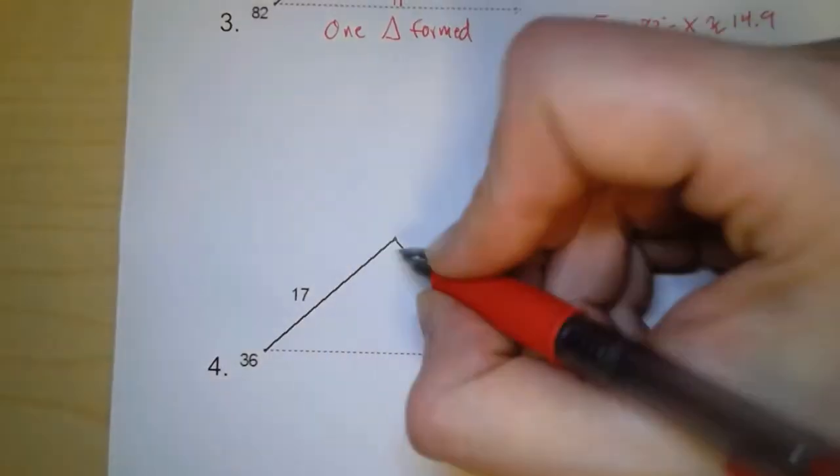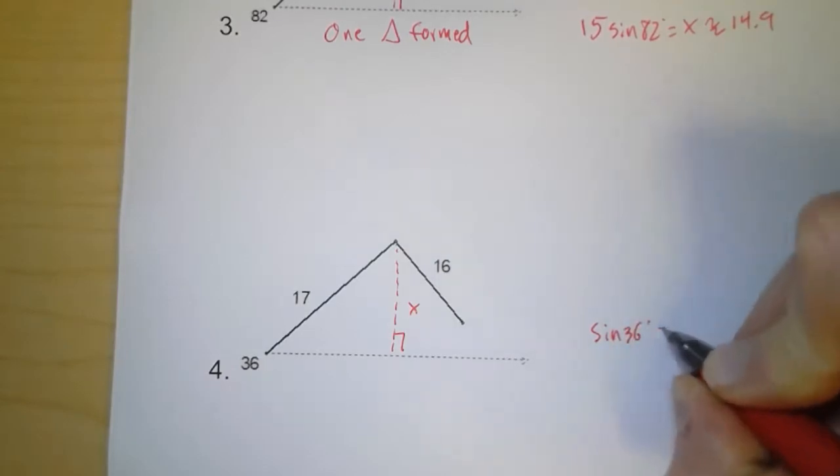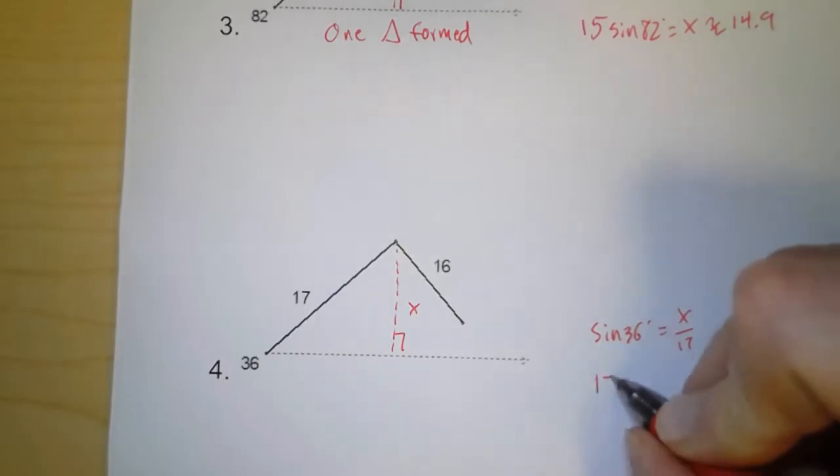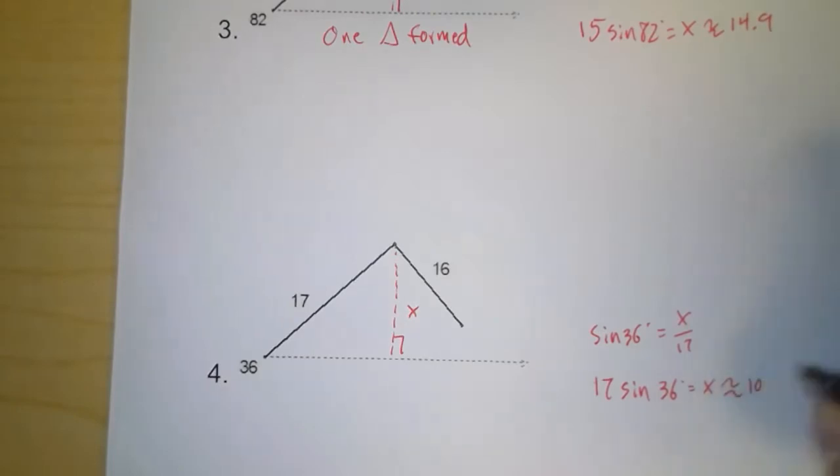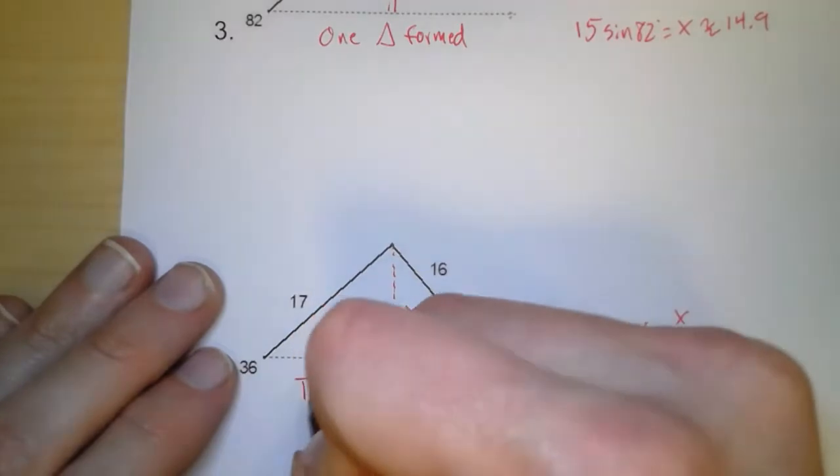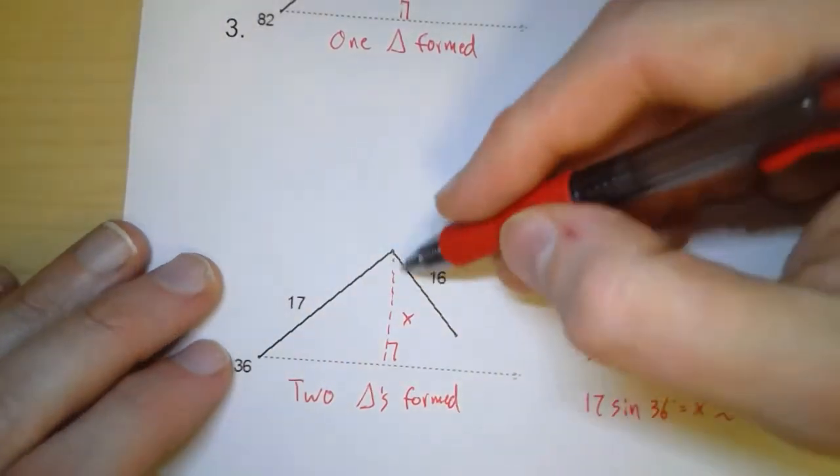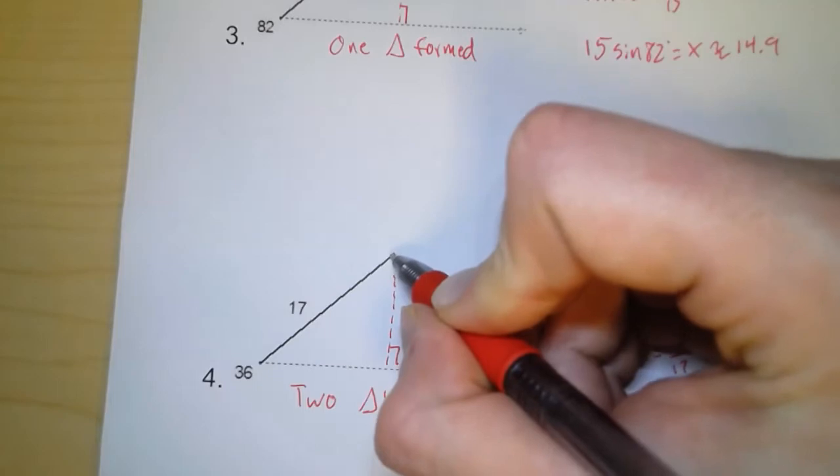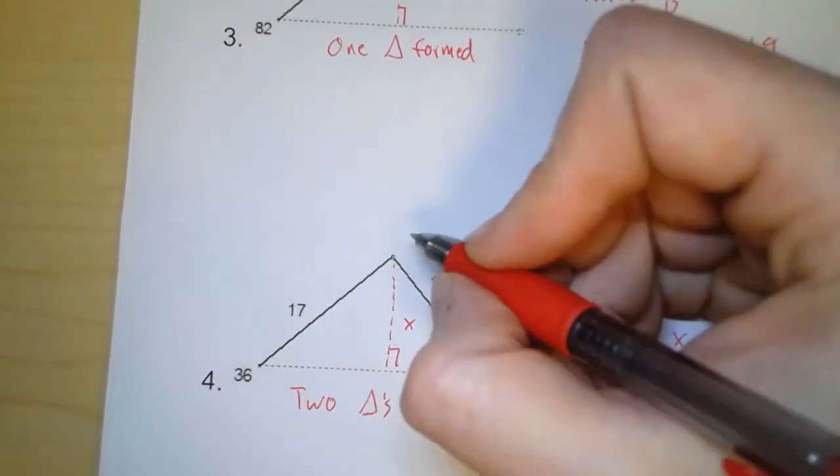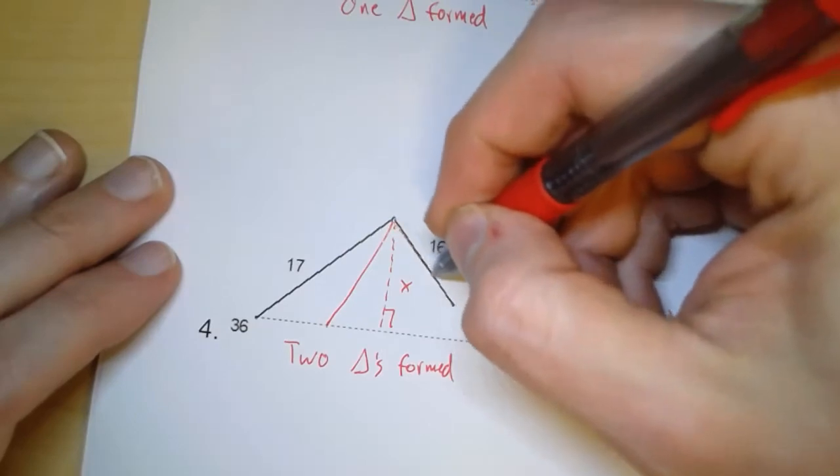Now for this one, if I draw this down and find it, sine of 36 degrees equals x over 17. If I multiply by 17, you get 17 sine of 36 degrees. Now in this case, we actually have two triangles formed. Now how is that possible? Well, is 16 long enough to reach? Yes. The shortest distance is 10. 16 is long enough to reach. But it could also fit here, just as it could fit out here. So we have two different triangles.